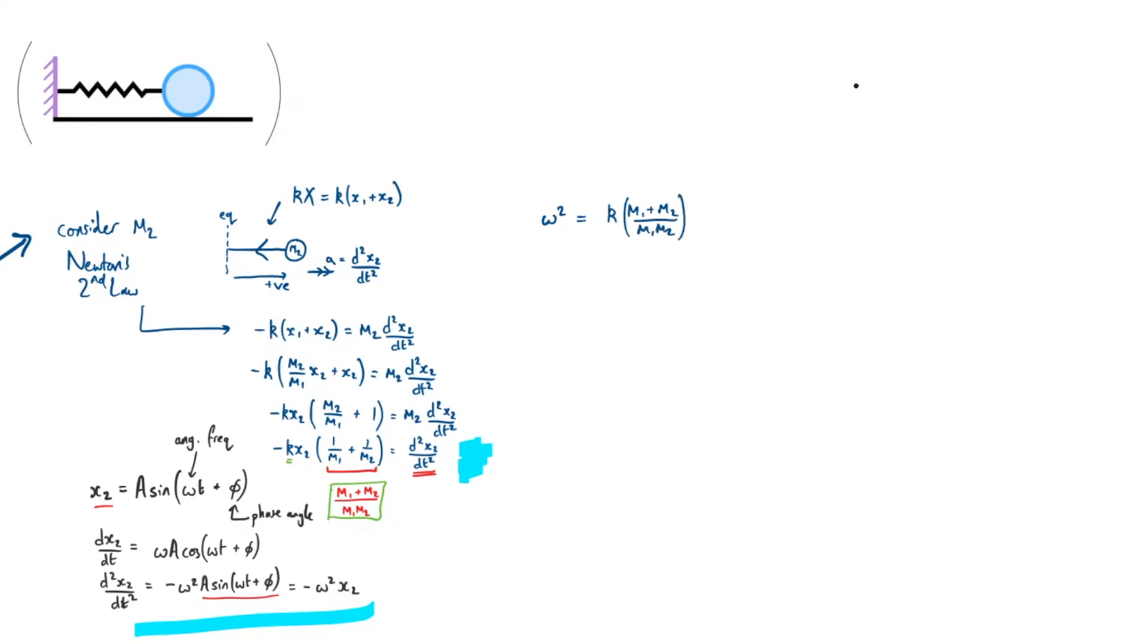Now this is often formulated in a slightly different way where we define the reduced mass, where we have k over mu, and here we're just going to define a thing called the reduced mass is equal to m1 m2 over m1 plus m2. So this is the reduced mass mu. So now we know the angular frequency omega is the square root of k over mu.